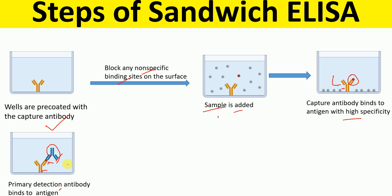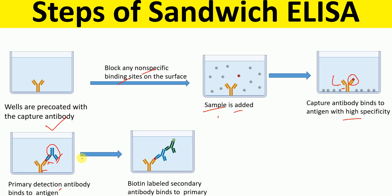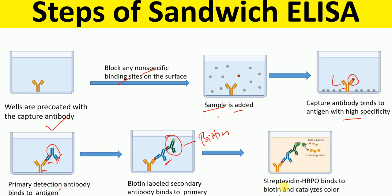This is the primary detection antibody. We then use a biotin-labeled secondary antibody, which binds to the primary detection antibody. After this step, in the final step, we add streptavidin-HRP substrate, which binds to the biotin and catalyzes the color reaction.